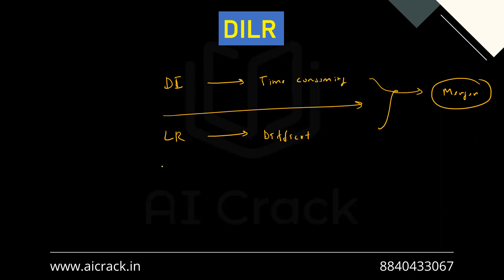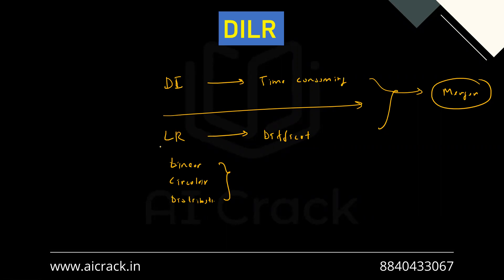Doing a trend analysis for LR sets: in the earliest cases they used to give LR set questions along with statements and conclusions questions. Eventually they started giving one full set of five questions, primarily in the linear arrangement zone, circular arrangement zone, and distribution zone. These are the three main topics they have asked in the LR section of PGDBA. Many people have been asking what if they start giving sets on cubes, games and tournaments, or different kinds of puzzles similar to CAT — what if that happens?